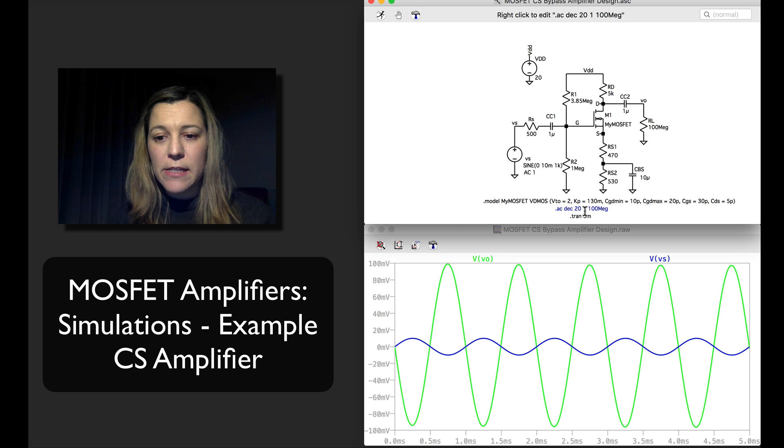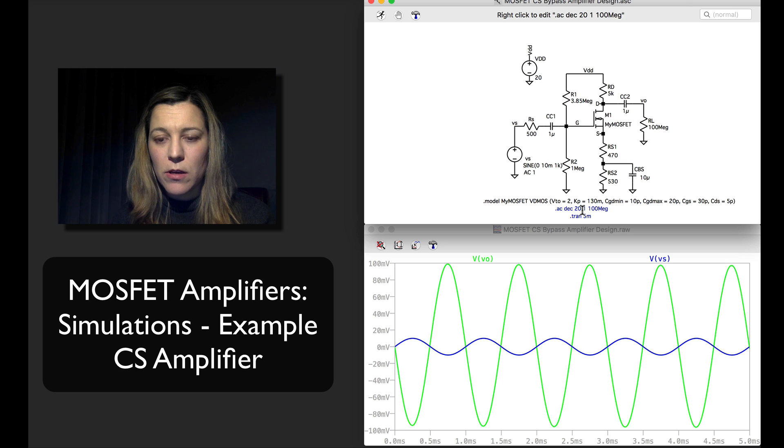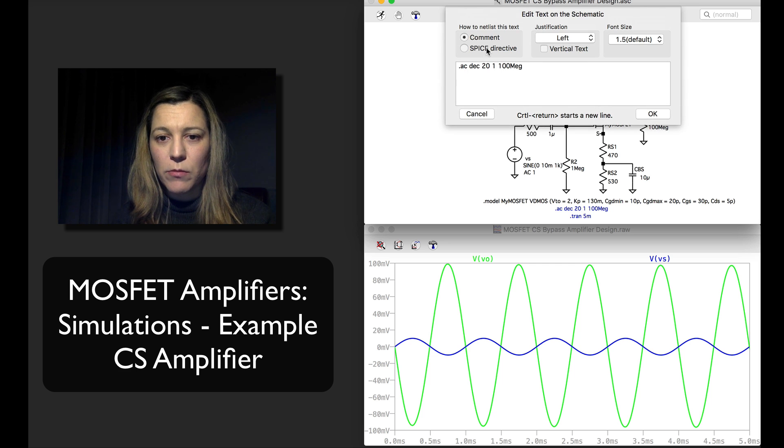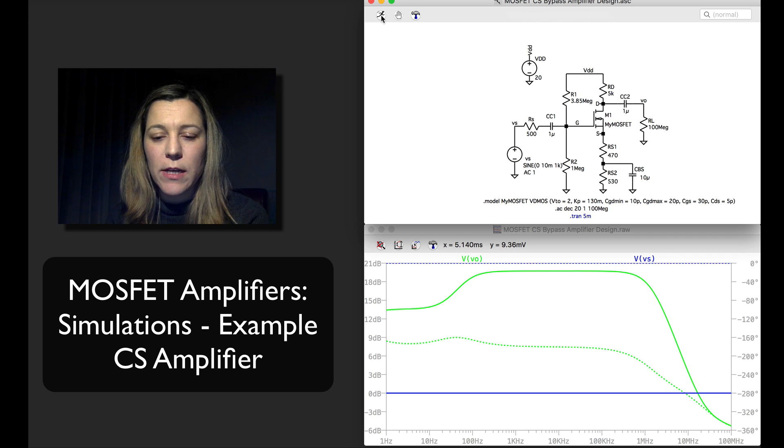Now I'm going to run my AC analysis so I'm going to go ahead and comment my transient analysis and instead I'm going to uncomment my AC analysis to verify my low cutoff frequency, high cutoff frequency, and it'll also show me the gain even though I've already verified the gain. So I'm going to go ahead and do that.